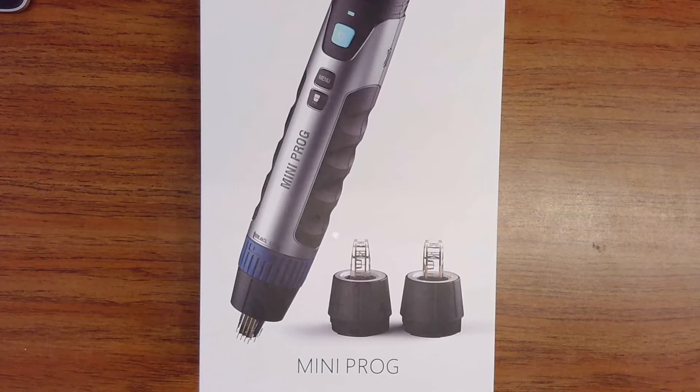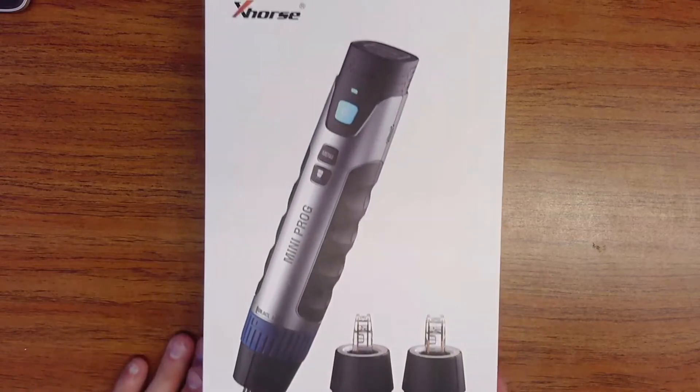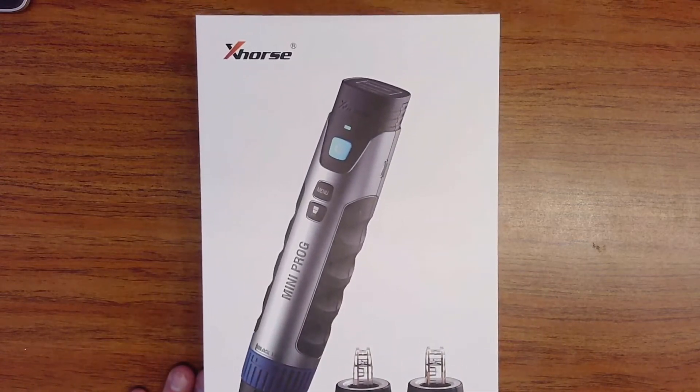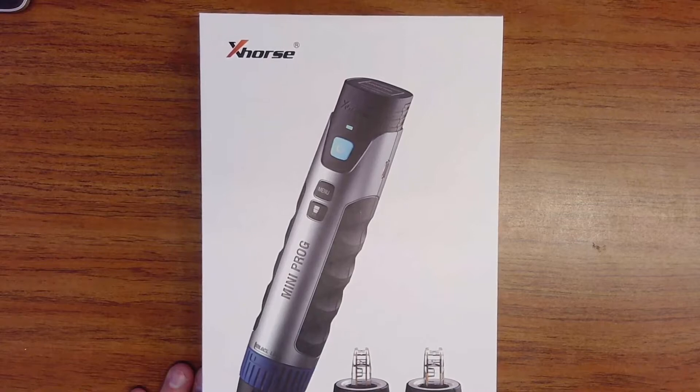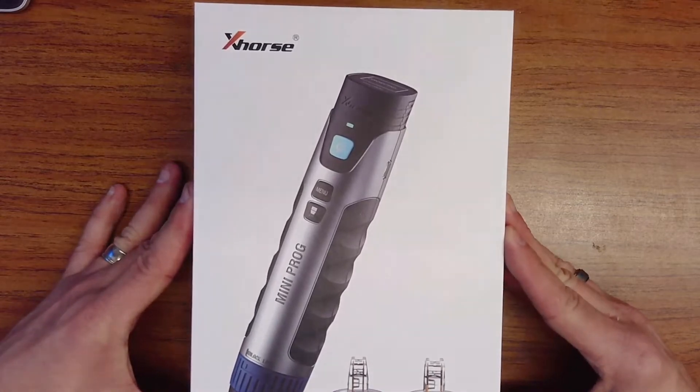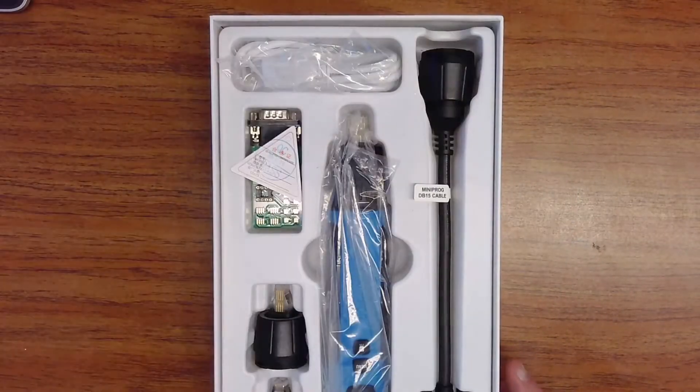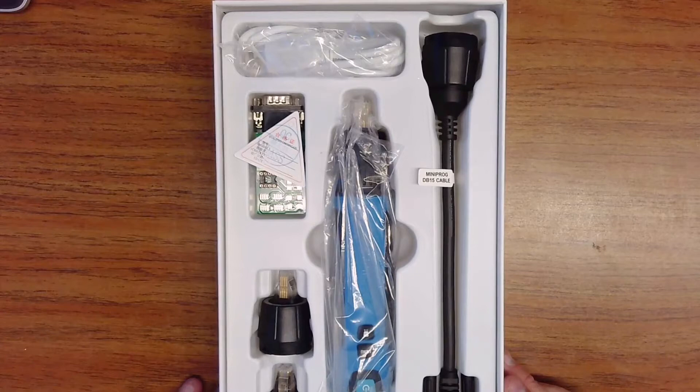So I'm going to go ahead and show you this here. Here is a portion of the box. Let me slide it down so you can see the rest of the box. A little bit tough to get everything in the frame. Again, this is the X-Horse Mini Prog. I'm going to go ahead and open the box up here. Looks like we've got a nice layer of foam protection here. And then we've got the box.